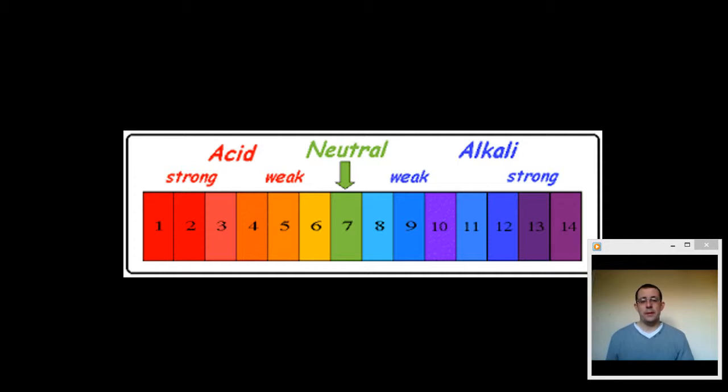When you go to below 7, that means it's acidic. Things which are close to 7 are slightly acidic, like vinegar.